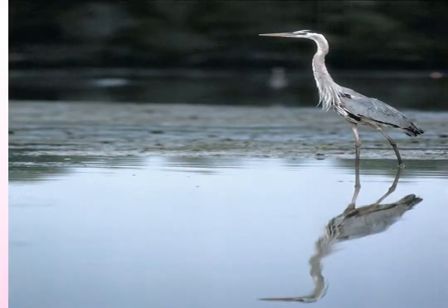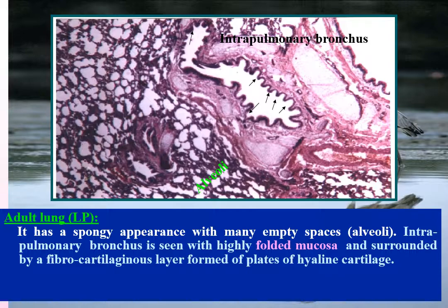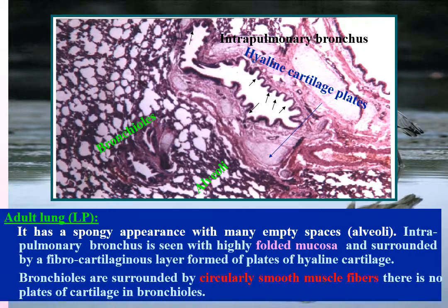Adult lung examined by low power has a spongy appearance with many empty spaces representing alveoli. An intrapulmonary bronchus is seen with highly folded mucosa and surrounded by a fibrocartilaginous layer formed of plates of hyaline cartilage. Bronchioles, on the other hand, are surrounded by circularly arranged smooth muscle fibers with no plates of cartilage.